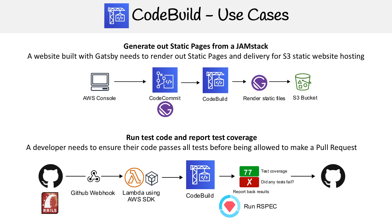CodeBuild will pull down the Ruby on Rails project and run RSpec, which will generate test coverage and indicate whether the tests failed or not. It's going to take those reports, put them in a zip, and pass them on to another Lambda function. That information then gets passed back to GitHub to determine whether the pull request should be allowed or not.